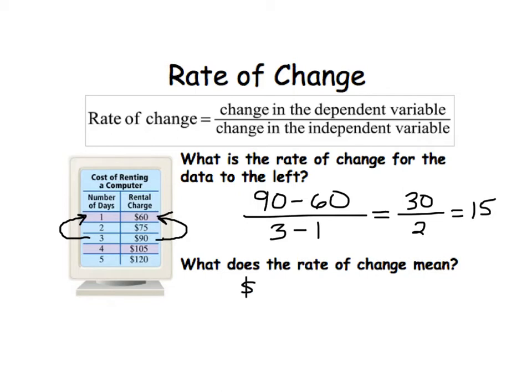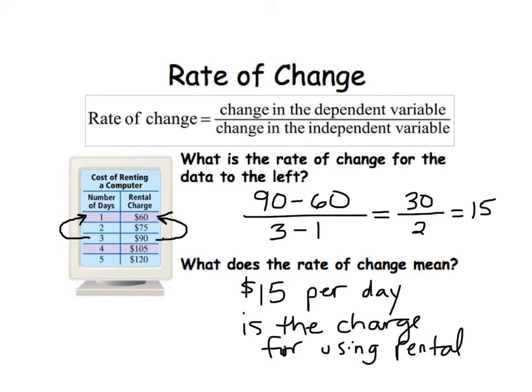And the number of days is indeed the independent variable because the number of days you have the computer determines the charge of renting the computer. So 90 minus 60 is 30. 3 minus 1 is 2. We get 15. And so the rate of change, what does it mean? Well, it means the rate of change for this circumstance is $15 per. So dollars is the dependent variable unit, because it was rental charge, so it's dollars, per day, per one day. And the number of days, that was our independent variable unit. So what does it mean? It means that there's a difference of $15 per day for the charge of using the rental computer.